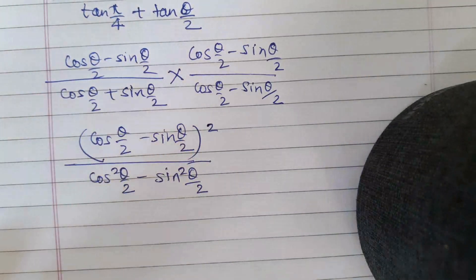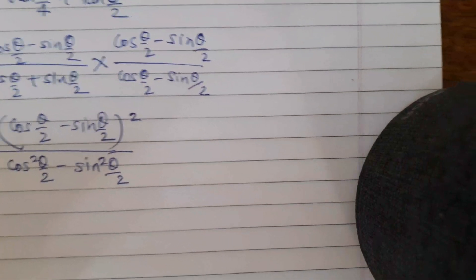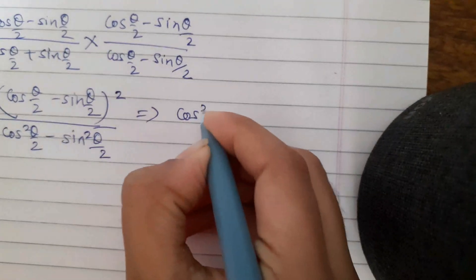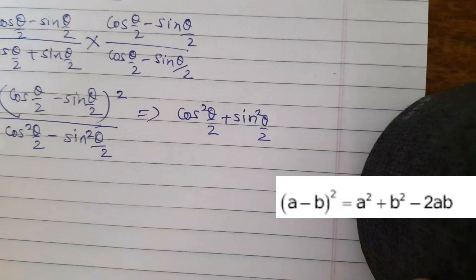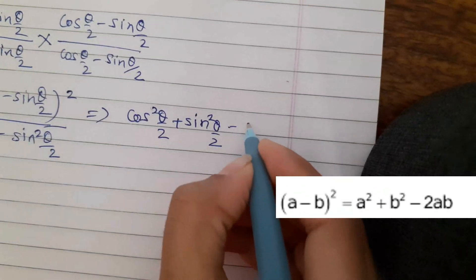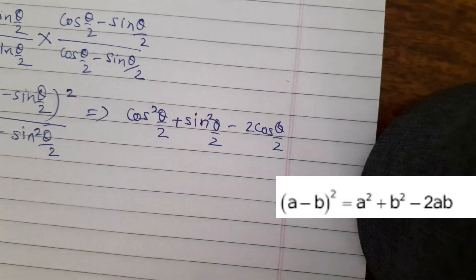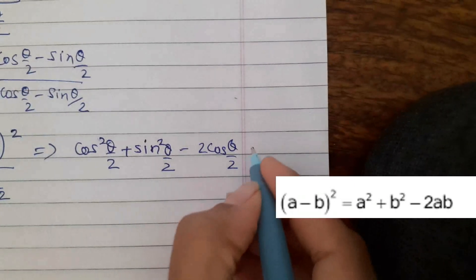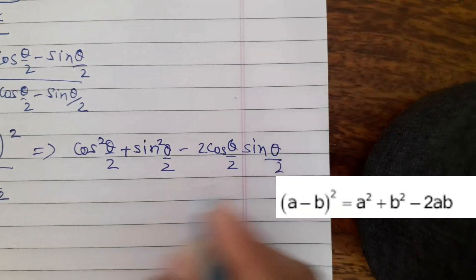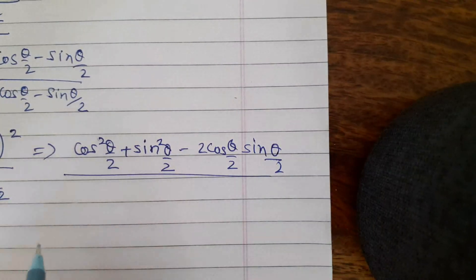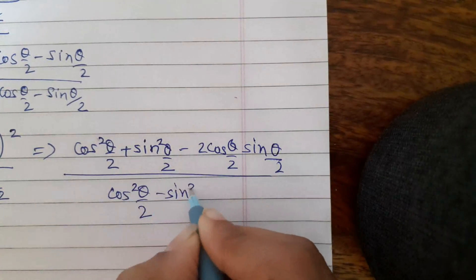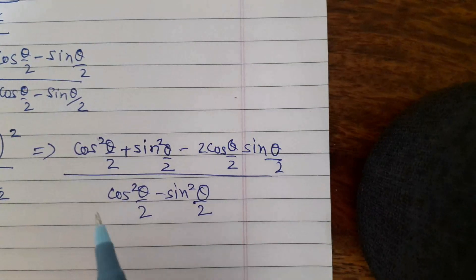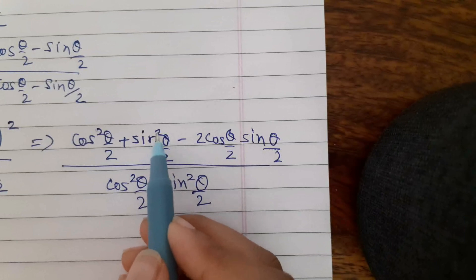Expanding the numerator: (cos(θ/2) - sin(θ/2))² = cos²(θ/2) + sin²(θ/2) - 2·cos(θ/2)·sin(θ/2). Since cos²θ + sin²θ = 1, the numerator becomes 1 - 2·cos(θ/2)·sin(θ/2).